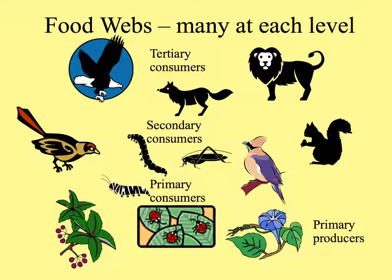At the bottom we have plants, the primary producers, eaten mostly by insects and larger herbivores, which are the primary consumers. Then secondary consumers — those that eat the herbivores, like birds eating bugs. And the tertiary consumers are the larger predators that eat those secondary consumers. At any level, organisms can eat from a number of levels below.